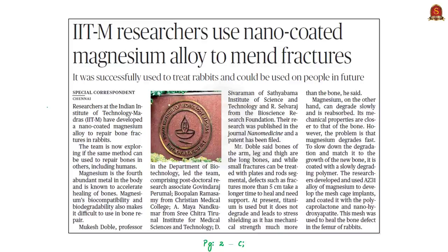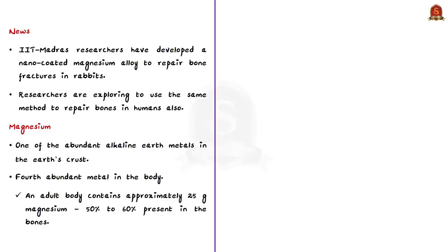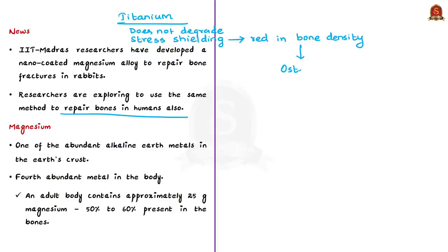This news article mentions that IIT Madras researchers have developed a nano-coated magnesium alloy to repair bone fractures in rabbits. Because of success in rabbits, researchers are exploring to use the same method in other animals and humans. This is considered an important invention because large fractures take longer time to heal and need support. At present, titanium is being used as implant to support healing of fracture, but there is a challenge: titanium does not degrade and remains in the body permanently. It also leads to stress shielding because it has mechanical strength much more than that of bone.